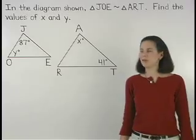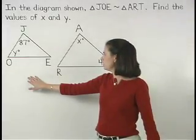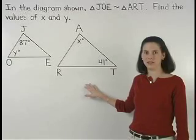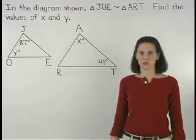In this example, we're given that triangle J-O-E is similar to triangle A-R-T, and we're asked to find the values of x and y.